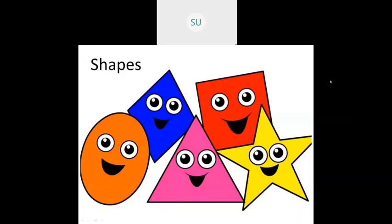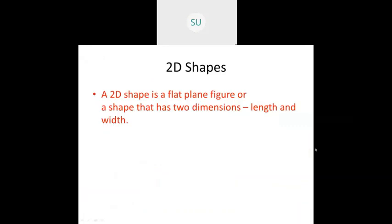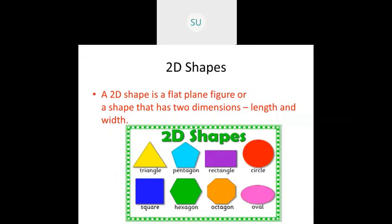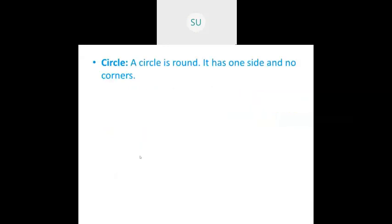Let's revise what shapes are. Shapes, or 2D shapes, are flat plain figures with two dimensions: length and width. We previously learned about triangles, rectangles, squares, circles, and a few extra shapes. Now we'll review them one by one.